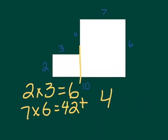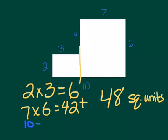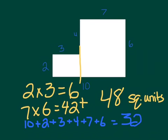And then when we calculate our perimeter, we're going to combine all of our lengths and widths of our sides around the distance of the outside of the shape. So I'm going to start with 10, and I'm going to make my way around. We have 10 plus 2 plus 3 plus 4 plus 7 plus 6 to get the perimeter of 32.